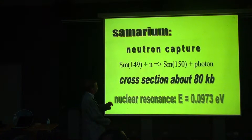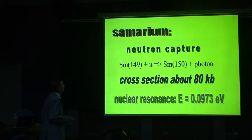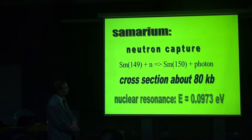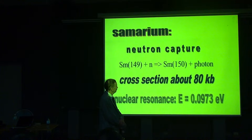What was interesting in this reactor, which was excavated and studied in detail by the French, is a reaction involving the element samarium — a rare earth metal. If you bombard samarium with neutrons, you produce samarium-150. The cross section for this reaction is huge, about 80 kilobarns — a very, very large cross section. This large cross section is understood: there is a nuclear resonance just above the threshold, about 0.1 electron volt above the threshold.